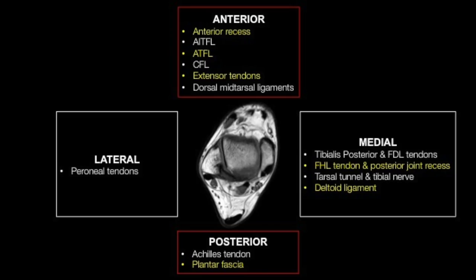Division of the ankle structures into various quadrants makes your life much simpler, so that when you need to assess the anterior talofibular ligament you know to assess the anterior quadrant, or when there's pain along the lateral aspect of the ankle you know to assess the peroneal tendons and so on.